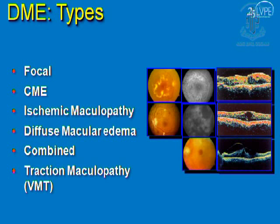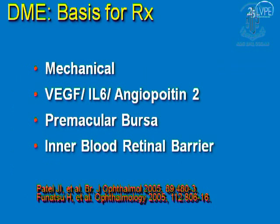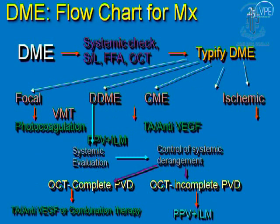If you see diabetic macular edema, the diagnosis can fall into one of these subgroups: it can be focal macular edema, cystoid macular edema, ischemic maculopathy, diffuse diabetic maculopathy, a combination of them, or tractional maculopathy. The basis for diabetic macular edema is either mechanical or angiogenic factors. The concept of the premacular bursa is very essential, as angiogenic factors can collect there and lead to persistence of macular edema. The inner retinal barrier is also very important.